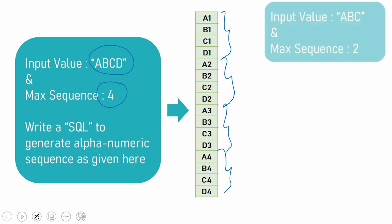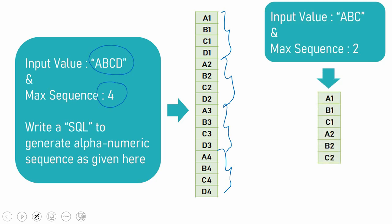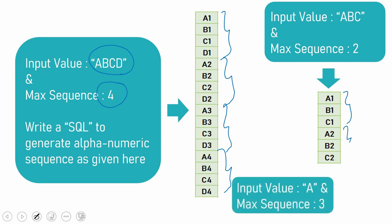Suppose if the input is just a, b, c and 2, the expected output is a1, b1, c1, a2, b2, c2 — that is, we should print a, b, c in 2 sets because our max sequence is 2. Suppose if the input is just a and the sequence is 3, the expected output is just a1, a2 and a3.